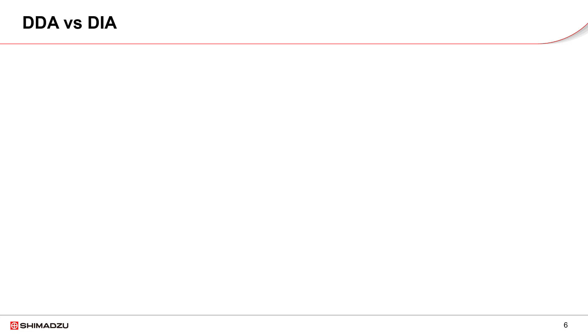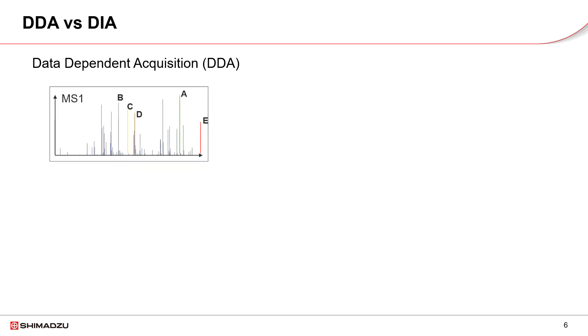In DDA mode, an intensity threshold needs to be pre-set with other parameters. These will decide if an ion is triggered for MS-MS event. Therefore, each precursor corresponds to a MS-MS-DDA spectrum.